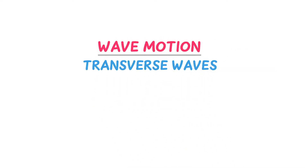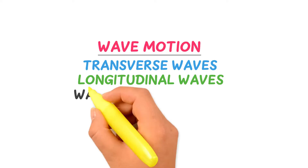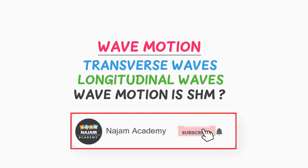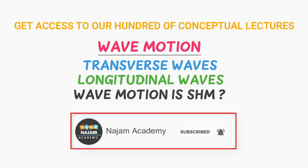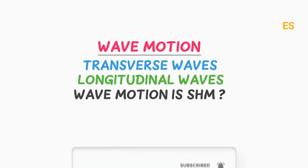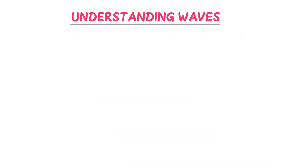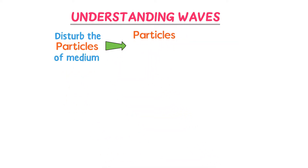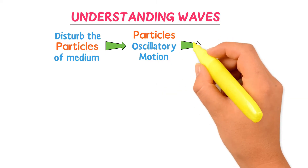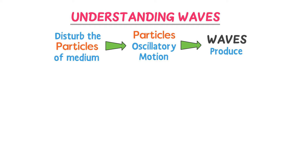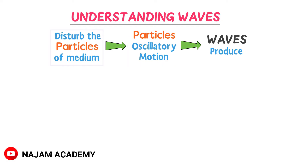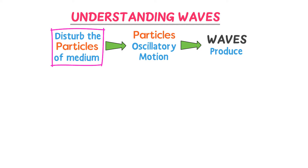In this lecture we will learn about waves motion, transverse waves, longitudinal waves, and why wave motion is called simple harmonic motion. When you disturb the particles of any medium such that those particles start oscillatory motion about their mean position, waves are produced. There are two conditions to produce waves in any medium: disturb the particles of the medium, and this disturbance should cause the particles to oscillate.